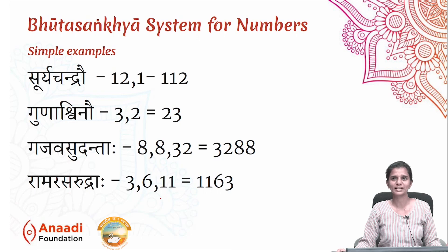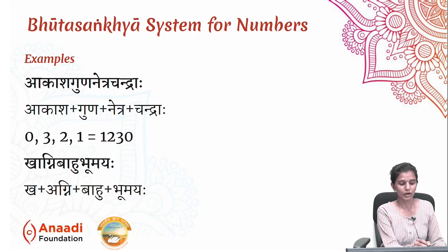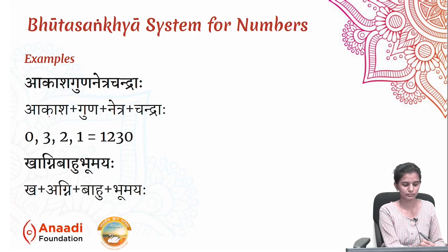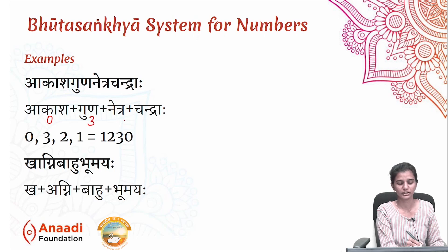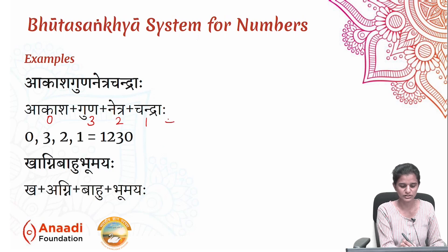Let us see some interesting examples showing that the same number can be represented by two different words. The word is Akasha-Gunanetra-Chandraha. Akasha represents zero. Guna — there are three Gunas — represents three. Netra means eyes, so two. Chandra — we have only one moon — represents one. When you reverse this, you get one, two, three, zero.